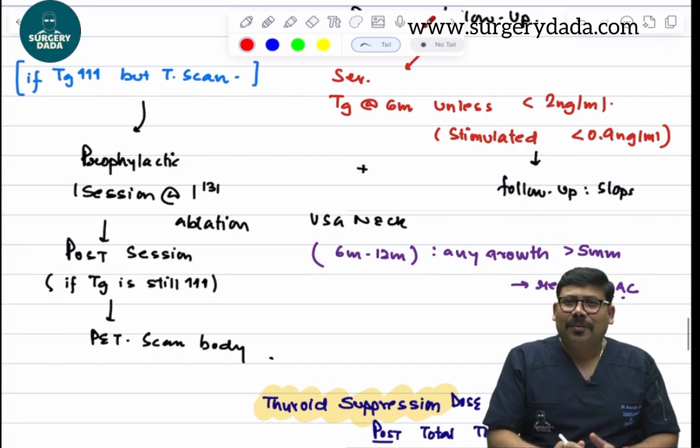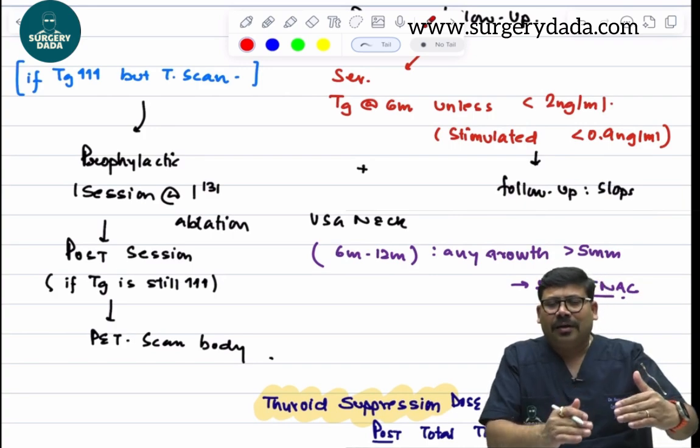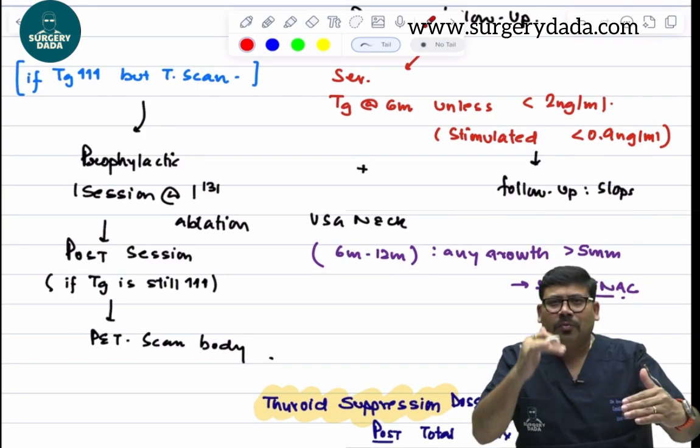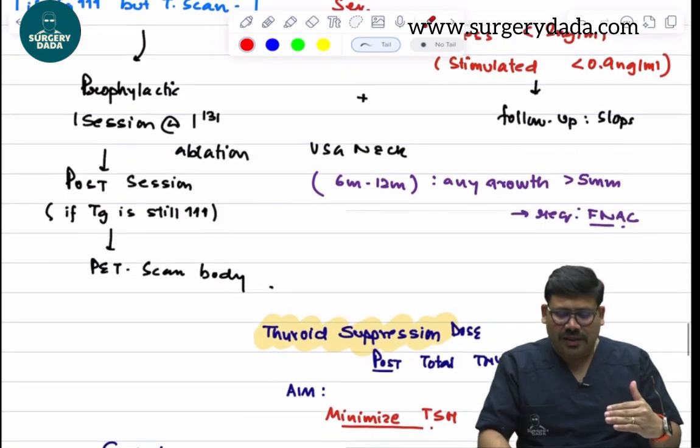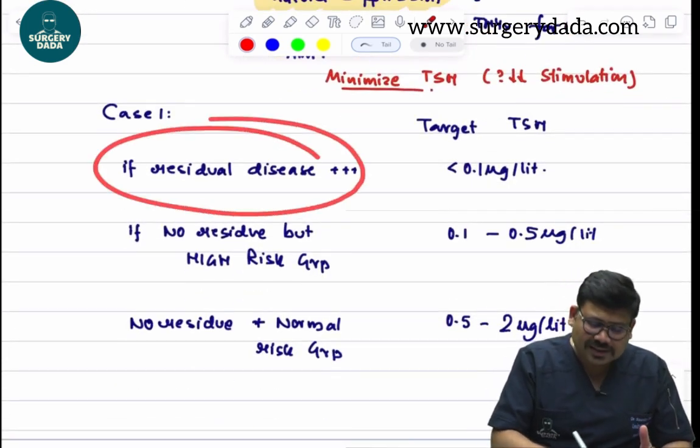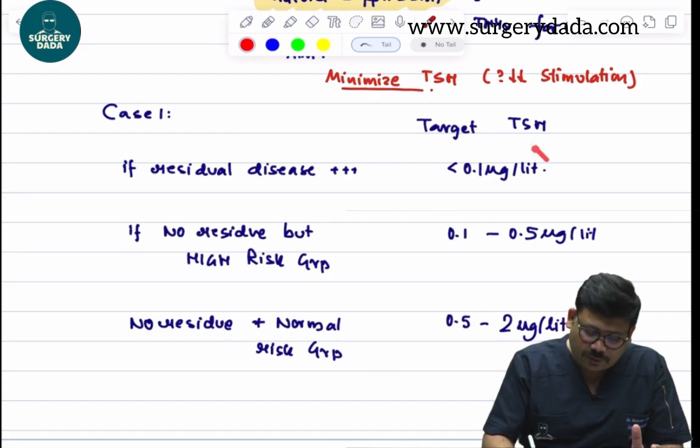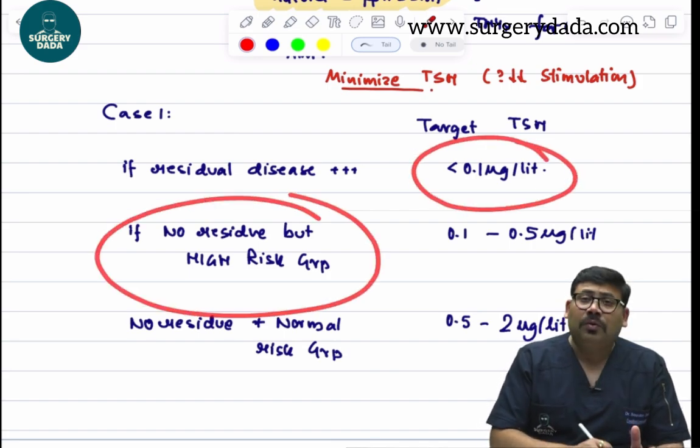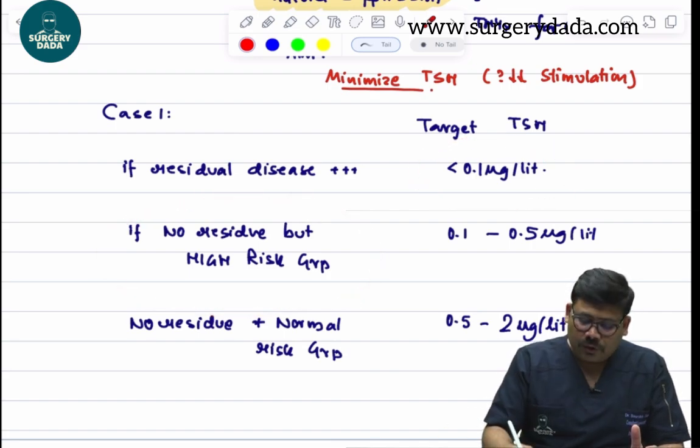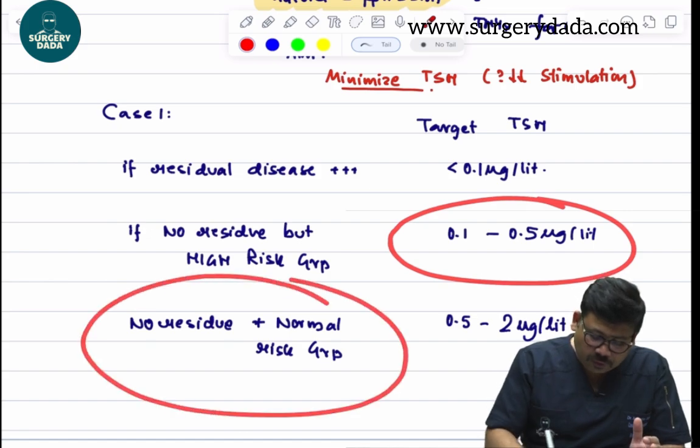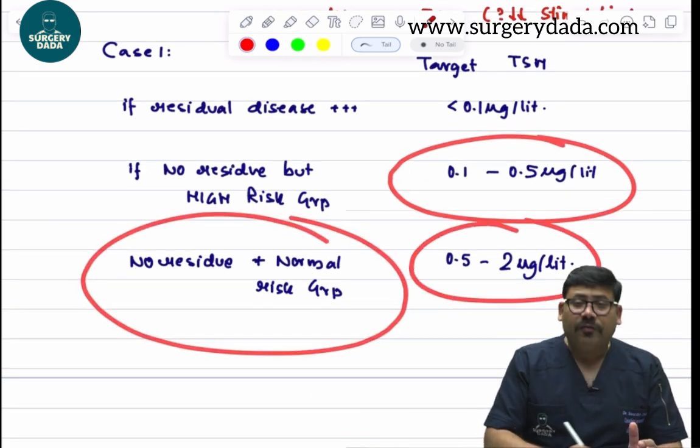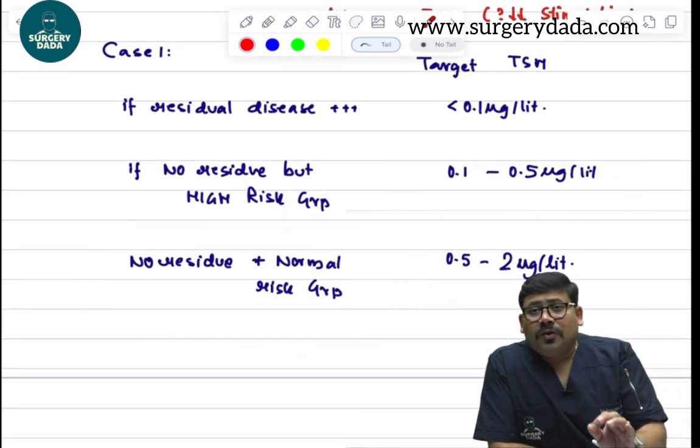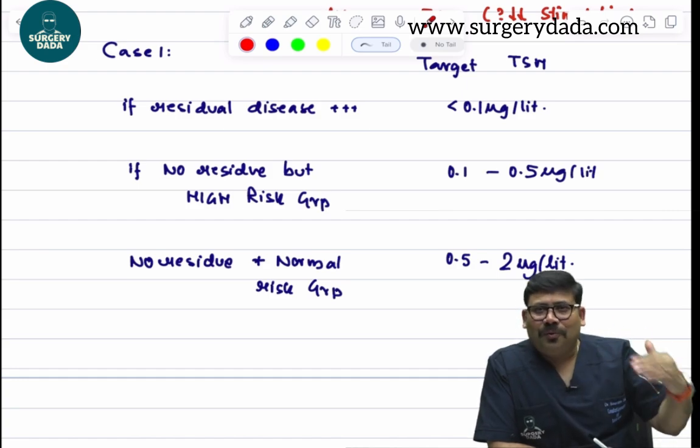What is thyroid suppression? We maintain euthyroid state, but at the same time we try to minimize the TSH to as low as possible. There are three cases: if residual disease is there, the target TSH is less than 0.1. If no residue but high-risk group, 0.1 to 0.5. No residue, normal risk group, 0.5 to 2.